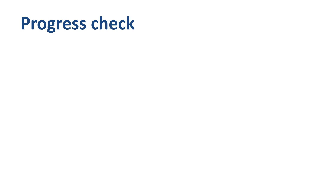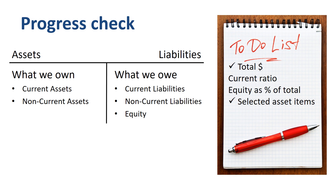Time to check our progress on the balance sheet analysis. So far we have been able to check the balance sheet total on the asset side, and reviewed in more detail selected asset items such as cash and marketable securities, property and equipment, and goodwill. Now it's time to turn to the other side of the balance sheet, to review liabilities and equity.